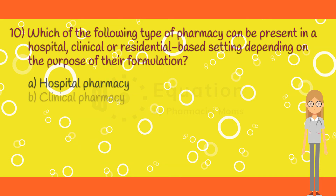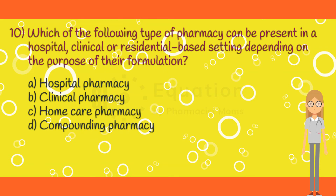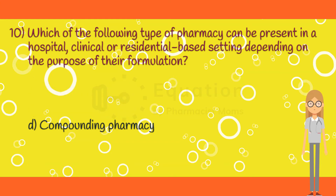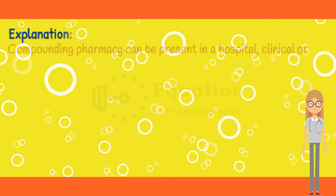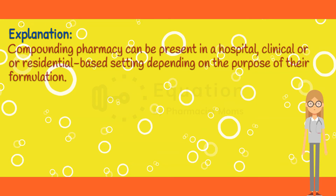Question 10. Which of the following type of pharmacy can be present in a hospital, clinical, or residential based setting depending on the purpose of their formulation? Option A: Hospital pharmacy. Option B: Clinical pharmacy. Option C: Home care pharmacy. Option D: Compounding pharmacy. The correct answer is option D. Compounding pharmacy can be present in a hospital, clinical, or residential based setting depending on the purpose of their formulation.